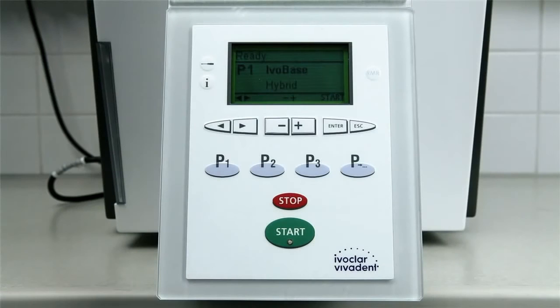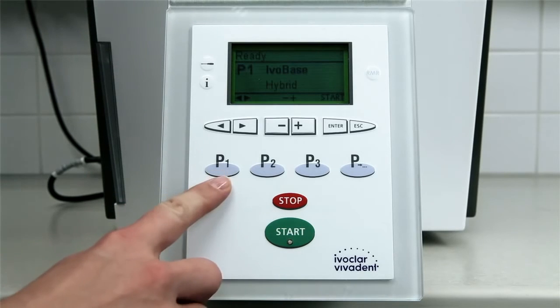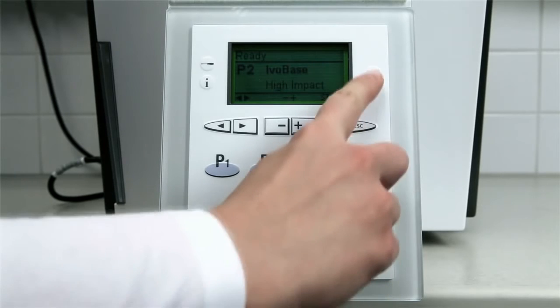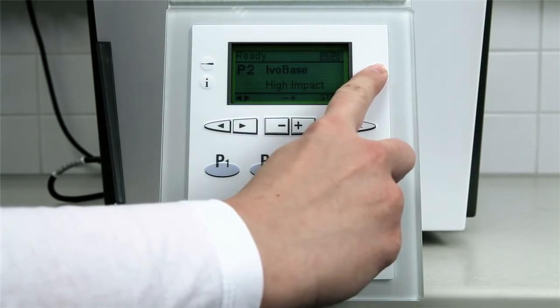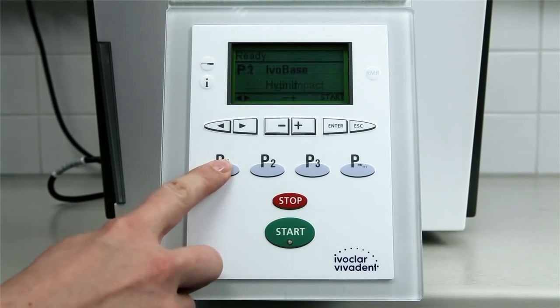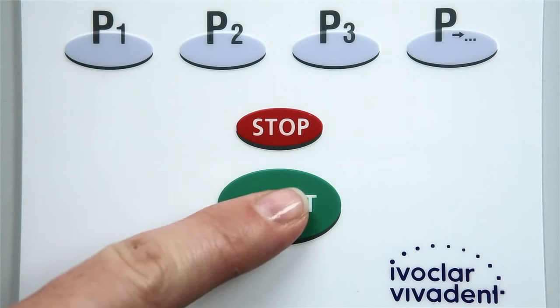For optimum results with IvoBase hybrid and IvoBase high impact, the IvoBase injector is equipped with polymerization programs especially designed for the respective materials. P1 for hybrid, P2 for high impact. To further reduce the residual monomer content, the optional RMR key can be activated. Select the corresponding program. Start the program.